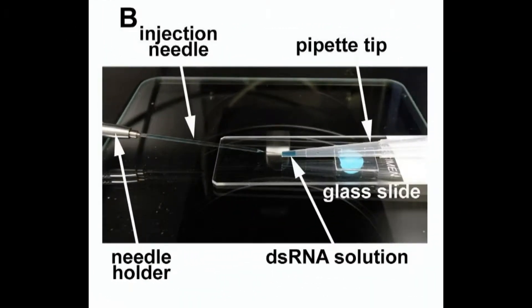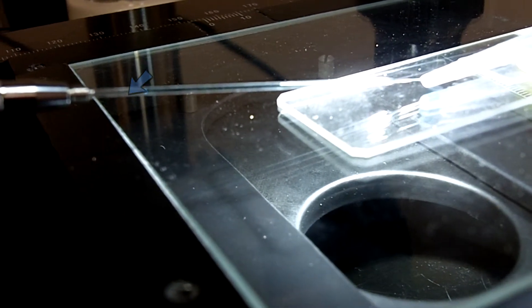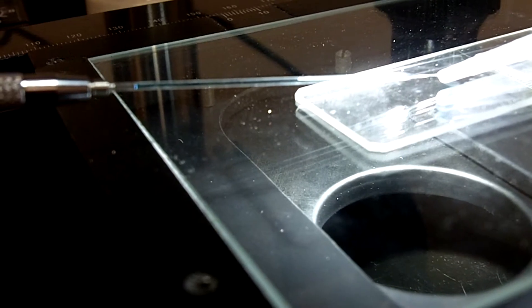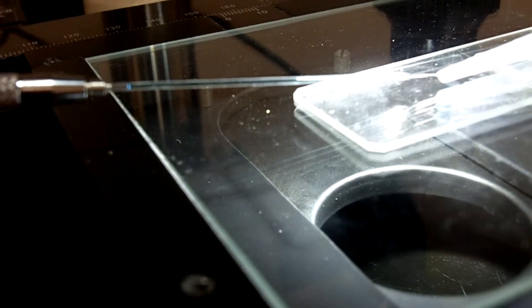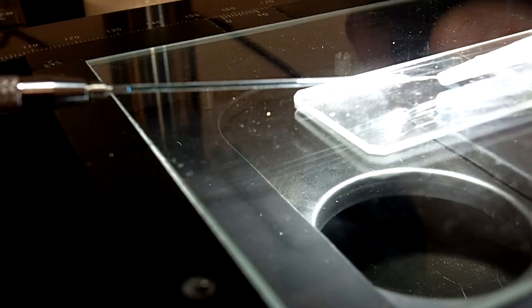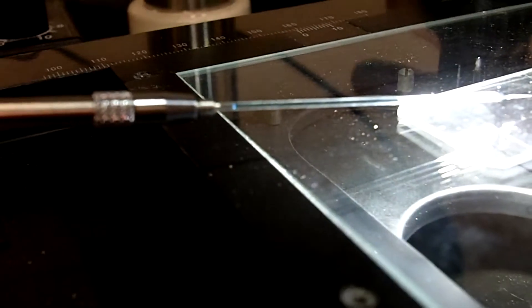The injection needle is inserted into the end of the pipette tip, and the double-stranded RNA solution is slowly drawn up into the needle. Here you can see Rainey doing it in action. Very slowly and kind of stopping and letting it, because sometimes it will just keep moving by itself. And I think the point is to stop about right there. So there's space, so you can tell that you're not going up into the tube. I think that's good enough.